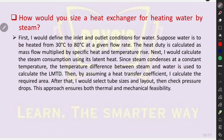Let's take a practical example. How would you size a heat exchanger for heating water by steam? First, I would define the inlet and outlet conditions for water. Suppose water is to be heated from 30°C to 80°C at a given flow rate. The heat duty is calculated as mass flow multiplied by specific heat and temperature rise. Next, I would calculate the steam consumption using its latent heat. Since steam condenses at a constant temperature, the temperature difference between steam and water is used to calculate the LMTD. Then, by assuming a heat transfer coefficient, I calculate the required area. After that, I would select tube size and layout, then check pressure drops. This approach ensures both thermal and mechanical feasibility.